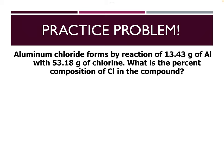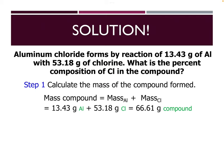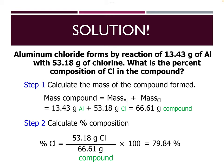Now try a practice problem — it's the same as what we just did but forming aluminum chloride. We have the mass of aluminum and the mass of chlorine. To find the percent composition of chlorine, first add the two masses to get the total mass of the compound. Then take the total mass of chlorine, divide by the total mass of the compound, and multiply by 100 to get the percentage.